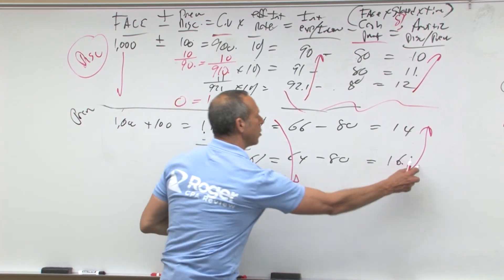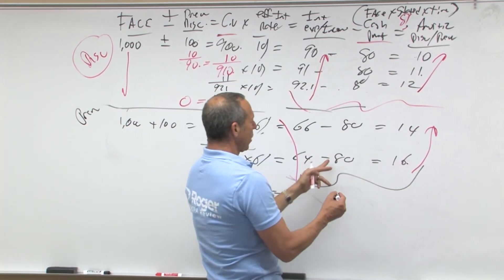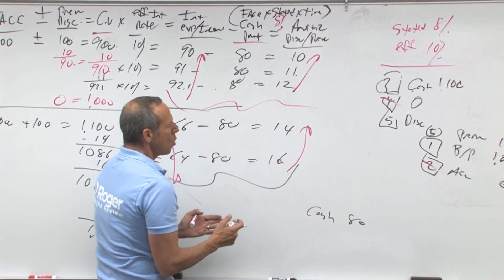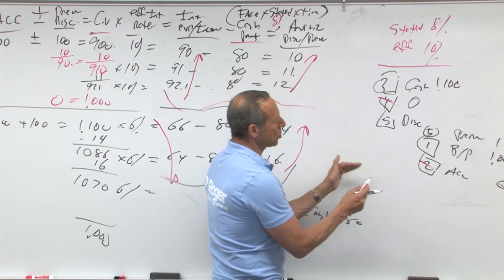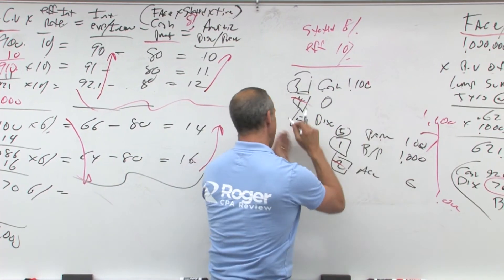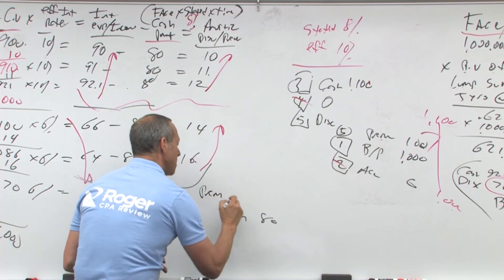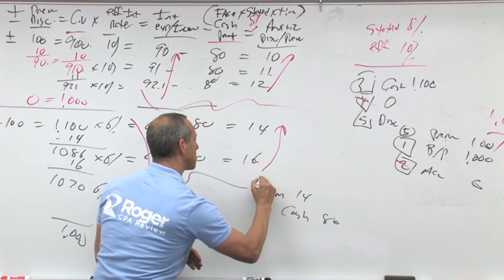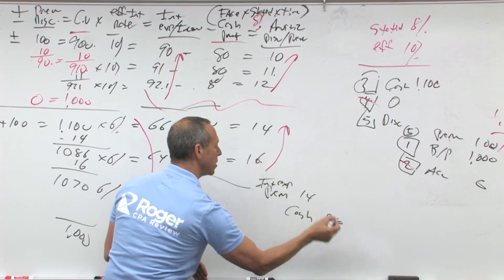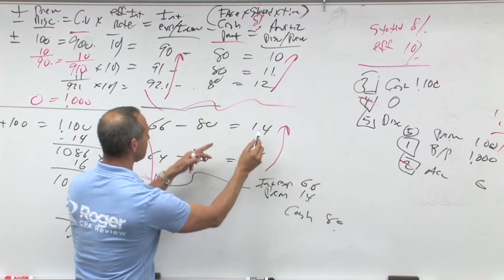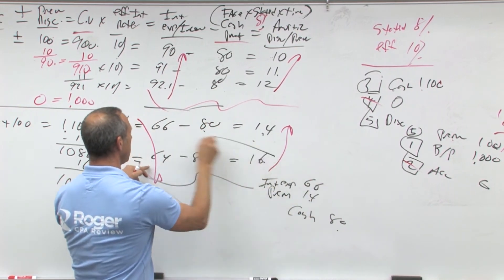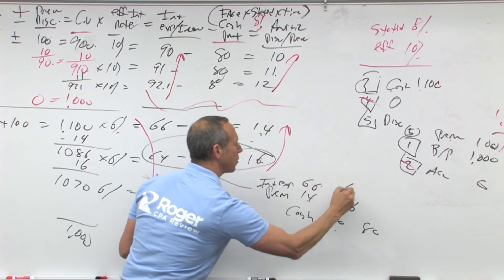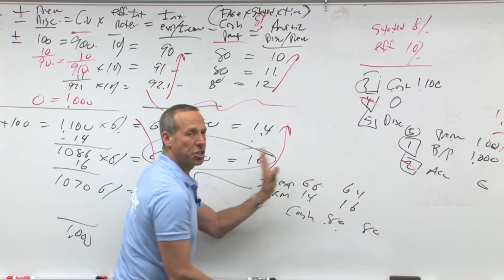So what's your journal entry for the premium? We credit cash of 80. We started with a premium entry, so we debit it out — in the first year, debit premium for 14. Your plug is interest expense of 66. The next year, cash is still 80, but instead of 14 amortization it's 16, and interest expense is 64. Next year, next year, next year. Just like a home mortgage — it starts high and goes down eventually to zero.